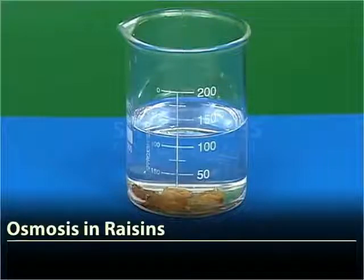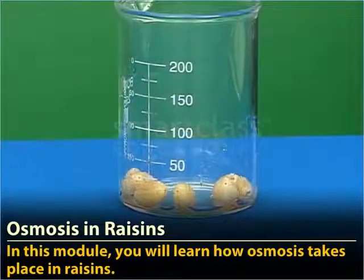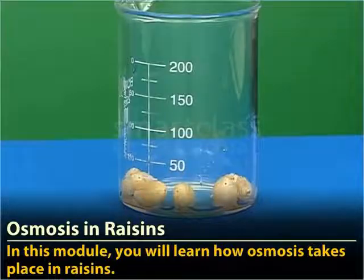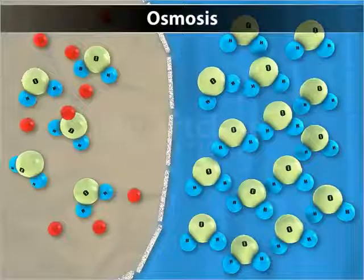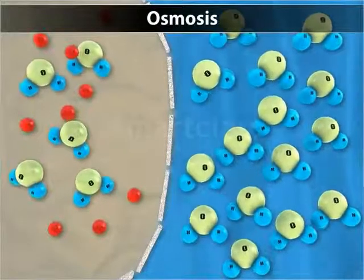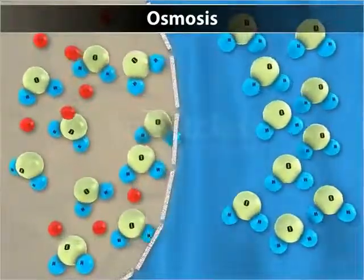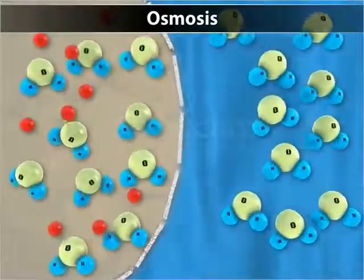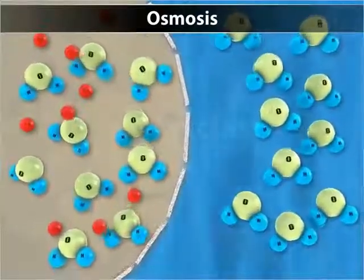Osmosis in Raisins. In this module, you will learn how osmosis takes place in raisins. Osmosis is the movement of water molecules from a region of higher solvent concentration to a region of lower solvent concentration across a semi-permeable membrane.